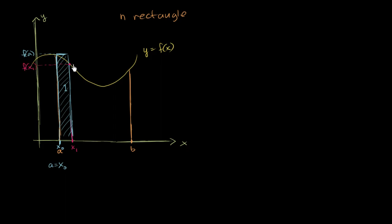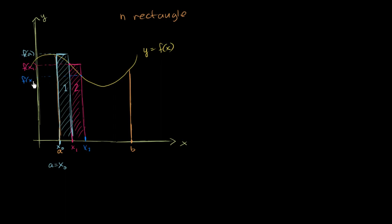So f of x sub 1 tells us our height, and we want an equal width to the previous one — we'll think about what the width is going to be in a second. So this right over here is our second rectangle that we're going to use to approximate the area under the curve. For rectangle number 3, the left boundary we're just going to call x sub 2, and its height is going to be f of x sub 2, with the same width as the others. So this is rectangle number 3.